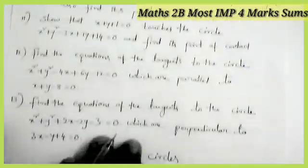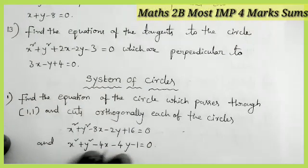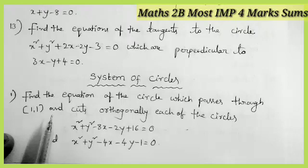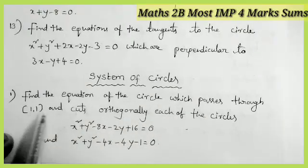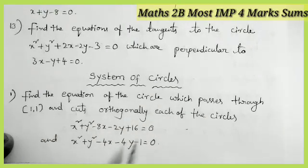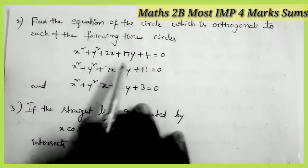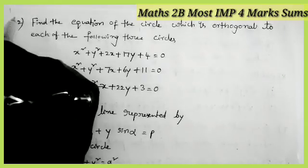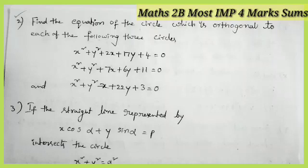Now let us see the system of circles — the second topic. One question comes in the examination from this topic. See the first one: find the equation of the circle which passes through the point and cuts orthogonally the given circles. Next: find the equation of the circle which is orthogonal to each of the following three circles — most important model, the orthogonal circle of the given three circles.